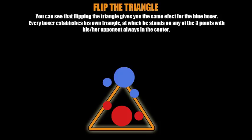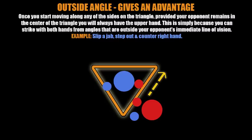This is the basis at which, within range of your opponent, you begin to deal with things like slipping and countering punches. Now we're talking about the outside angle — this is where you begin to talk about the usage of the triangle theory. Once you start to move along any of the sides of the triangle, provided you're able to keep your opponent in the center of your triangle, you always have the upper hand because you're attacking from an angle outside your opponent's immediate line of vision and you can attack with both hands. The triangle theory only works when your opponent is throwing punches at you.